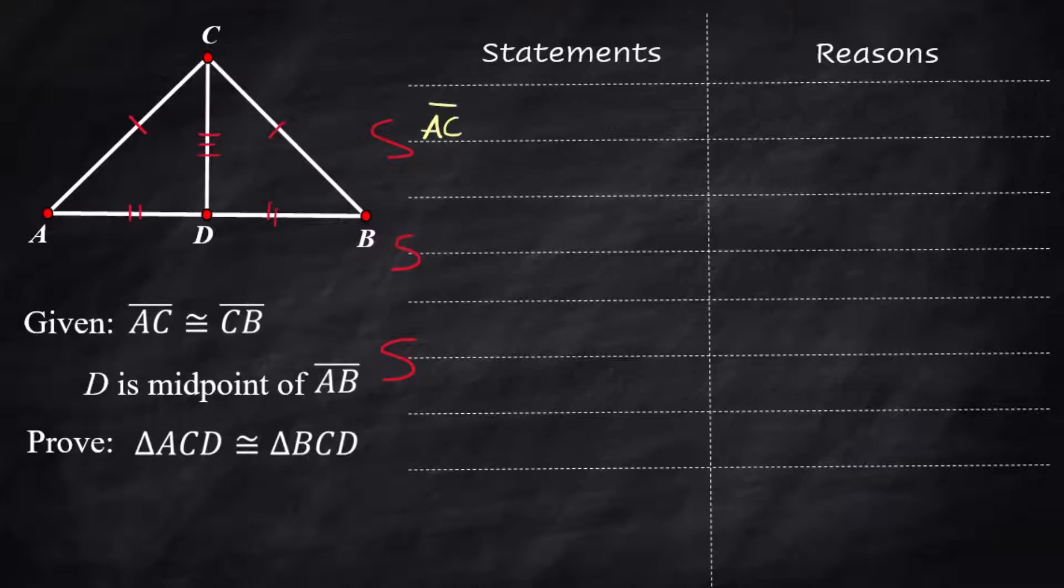So our first statement is to talk about one of the sides and that is AC is congruent to CB and that's given. Then they're telling us another given and we have to put that in the proof before we can use it and that is that D is the midpoint of AB and that's given.